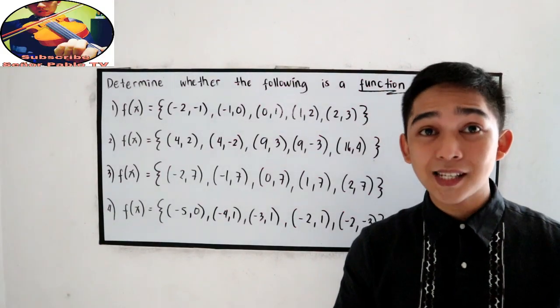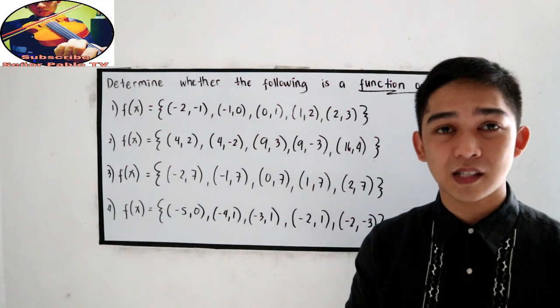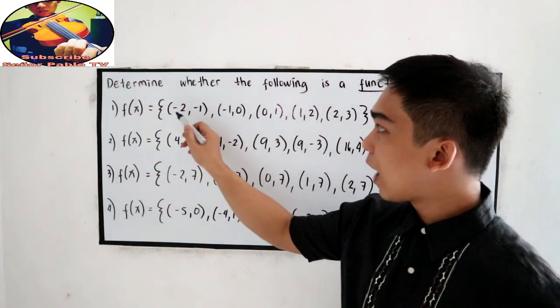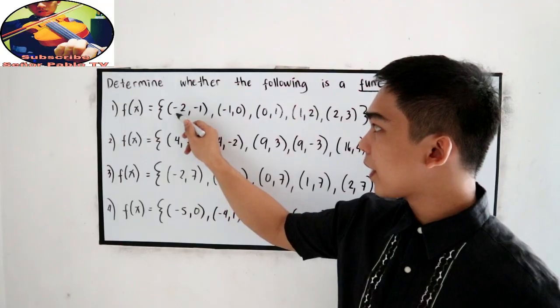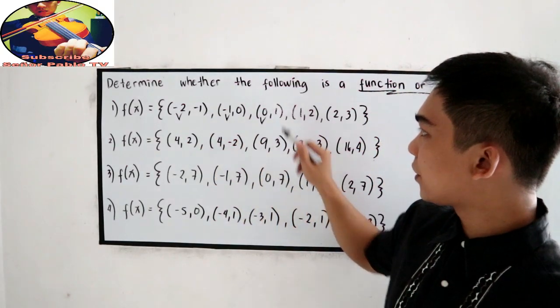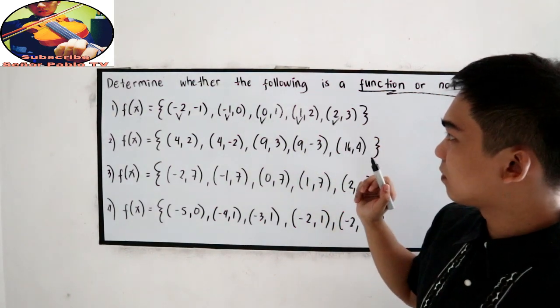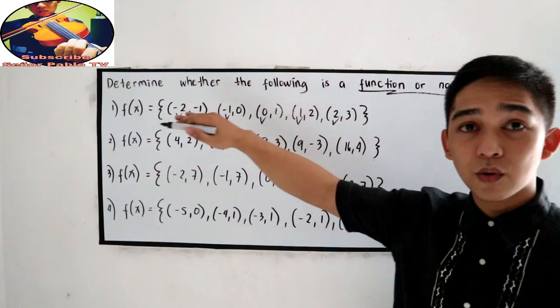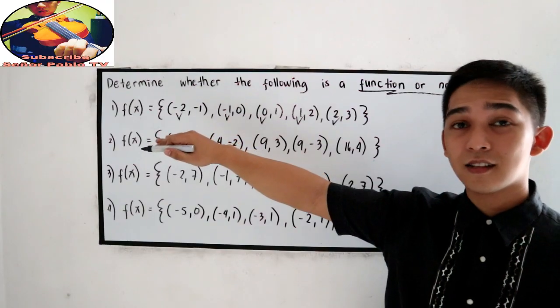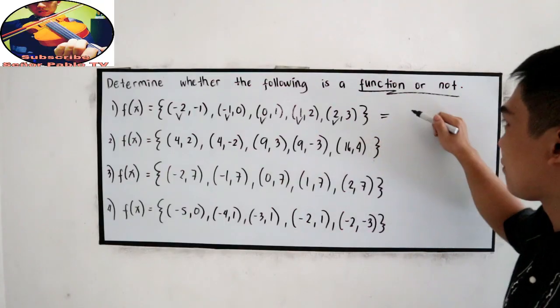Again, our abscissas must not be repeated. So let us focus on our abscissas. Number 1, our abscissas are negative 2, negative 1, 0, 1, 2. May naulit bang x-coordinate? There is not. So, is it a function or not? It is a function.